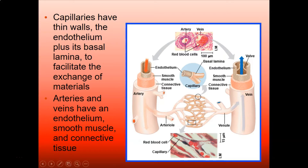That thin wall is important because that's where a lot of the exchange is going to happen, and some fluid has to escape from your capillaries. Arteries and veins also have an endothelium, but they additionally have a smooth muscle layer. Arteries are a little thicker than veins, and then you have connective tissue making up the outside of the vessel.